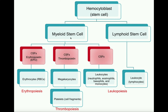Thrombopoietin triggers the myeloid stem cell to differentiate first into a very large cell called a megakaryocyte. The megakaryocyte is a huge, enormous cell, and ultimately it fragments into little platelets. Platelets are actually the smallest of all the formed elements. Through other colony stimulating factors, the myeloid stem cell can also differentiate into specific leukocytes — white blood cells, with subtypes including neutrophils, eosinophils, basophils, and monocytes. That covers the myeloid lineage.